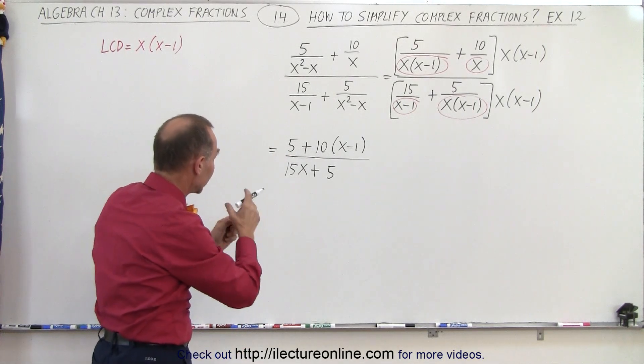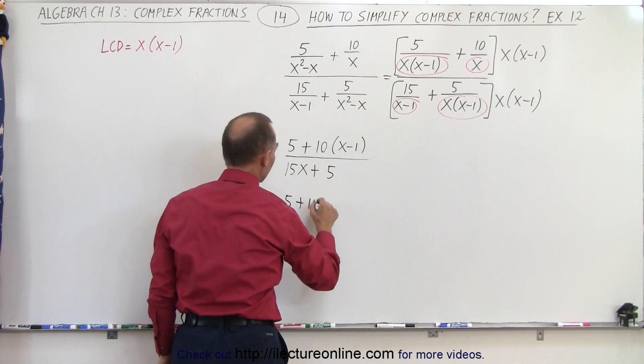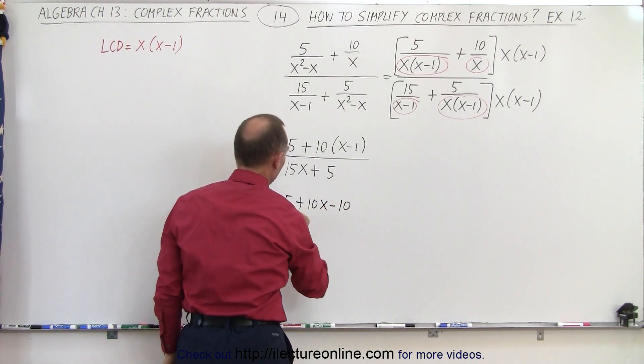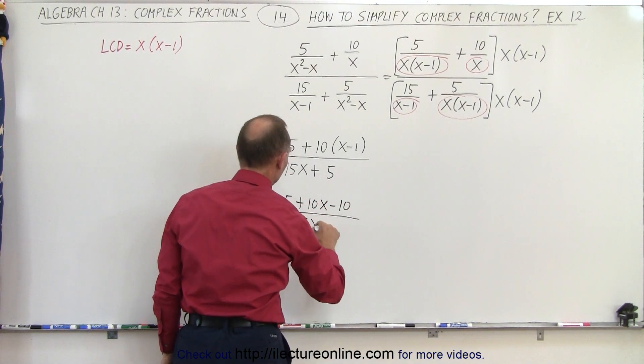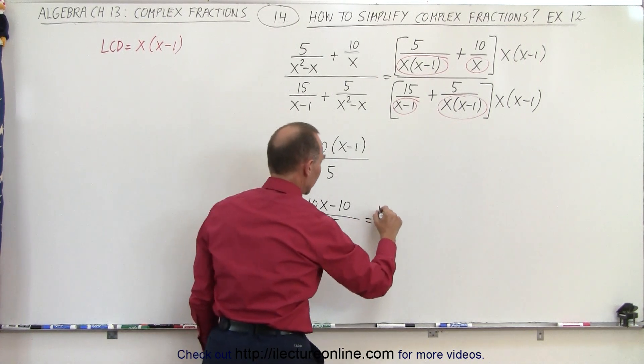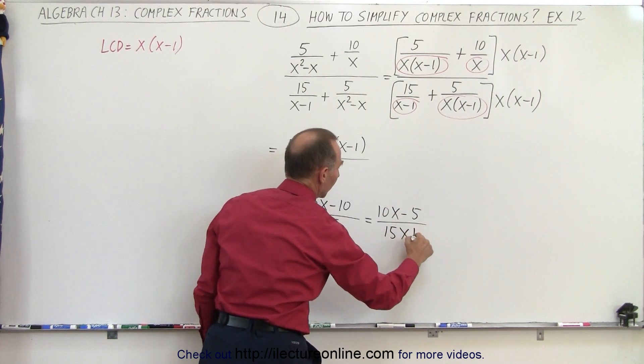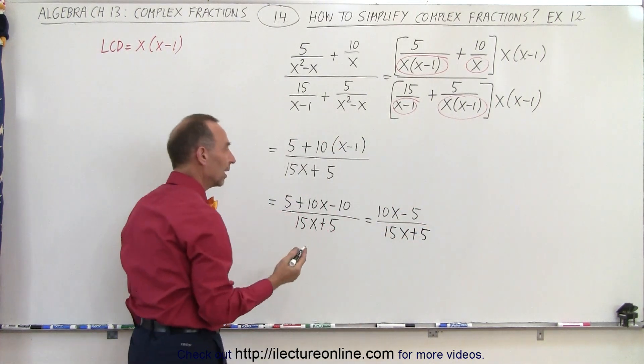Now, multiplying everything out and collecting common terms, we get the following: 5 plus 10x minus 10 divided by 15x plus 5, which is equal to 10x minus 5 divided by 15x plus 5.